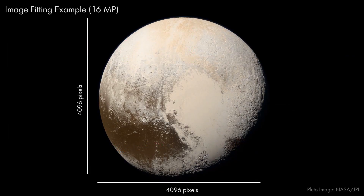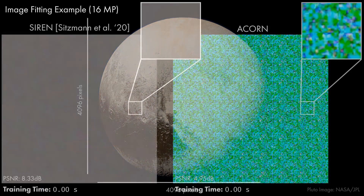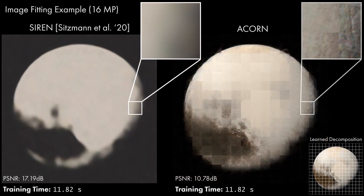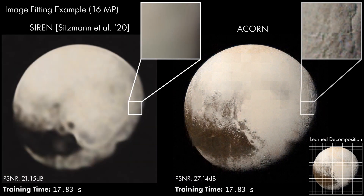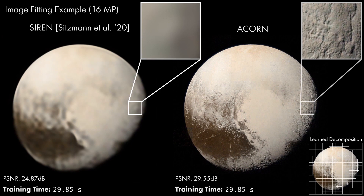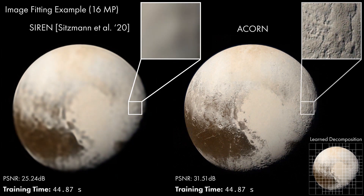ACORN can fit signals better than simpler architectures like SIREN or local implicit representations, and ACORN is significantly faster to train, as shown for fitting this 16-megapixel image of Pluto. While fitting the image, ACORN simultaneously optimizes a multi-scale decomposition of the image, which allows fitting detailed regions more efficiently. ACORN fits this image to 30 dB peak signal-to-noise ratio in 30 seconds, while SIREN takes over an hour of training time to achieve similar quality.